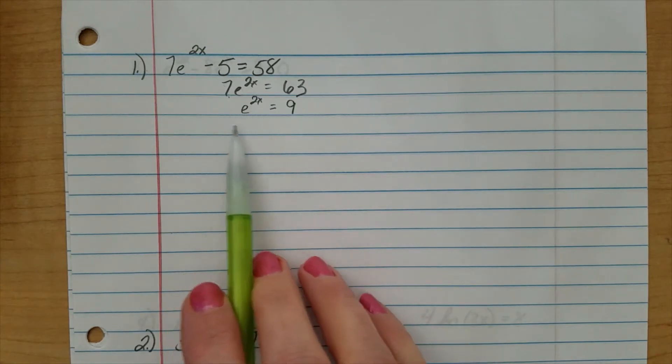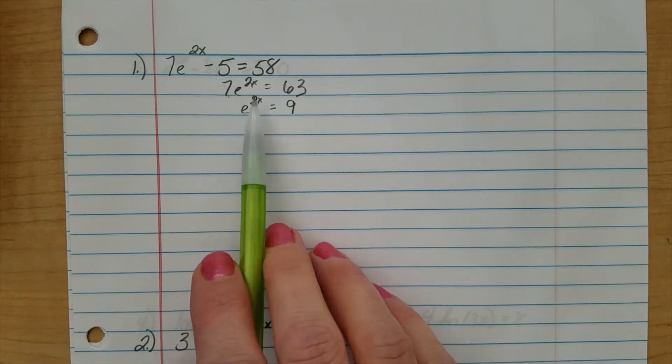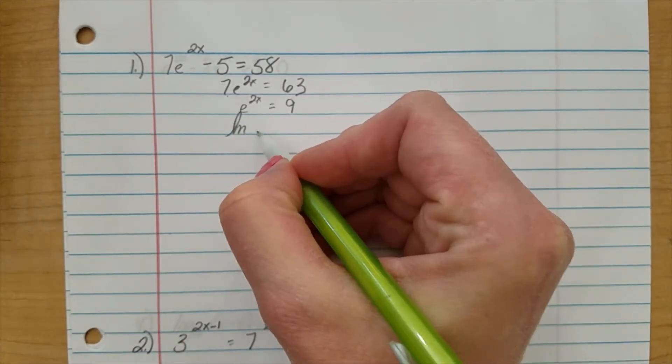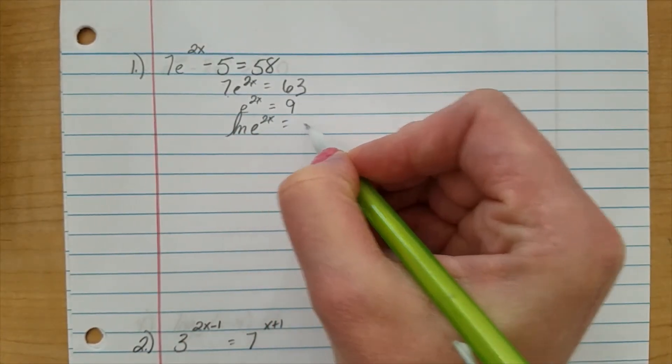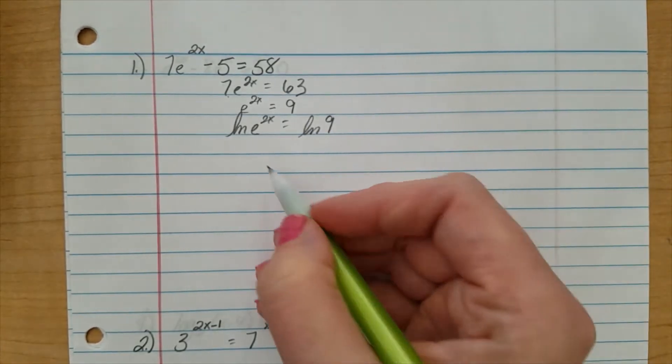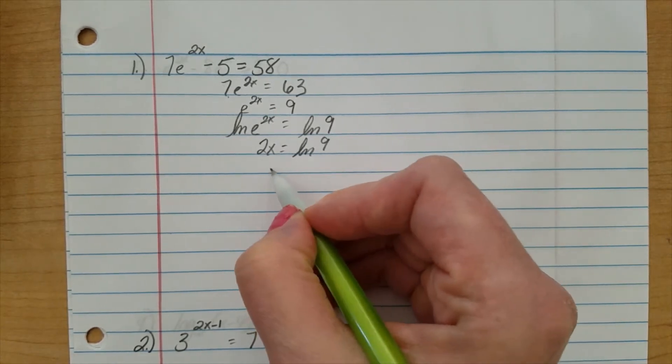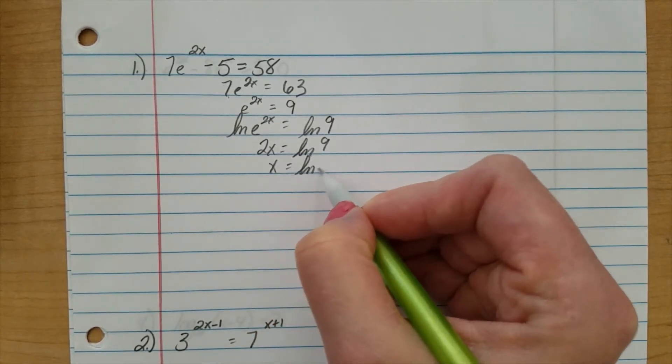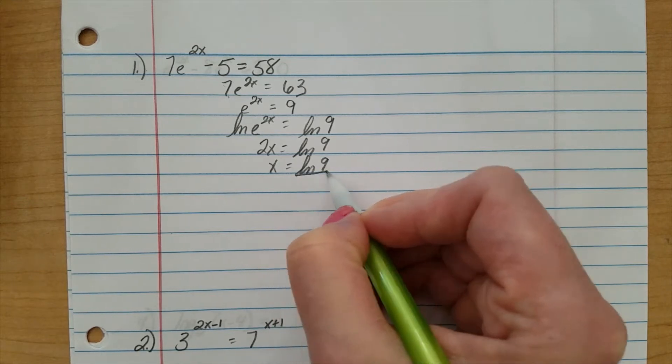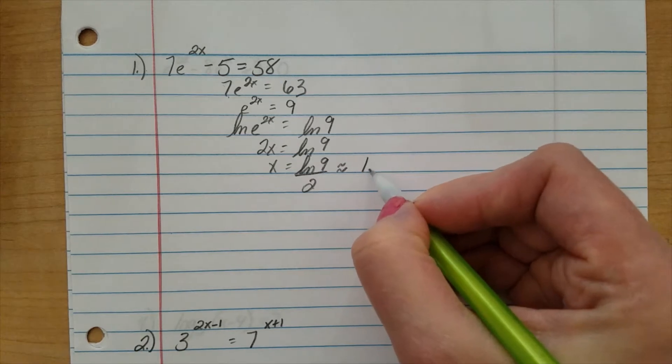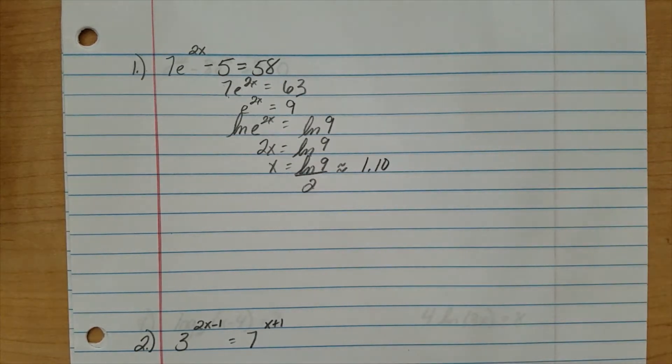Now, to undo the e so I can get that exponent to drop down, I'm going to take the natural log. The natural log is the inverse to e, and of course, what I do to one side, I have to do to the other. ln e to the 2x equals ln of 9. Here we go. 2x equals ln of 9. I'm going to divide out the 2. x equals natural log of 9 divided by 2. We're going to pop that in the calculator. We should get, we'll call it 1.10. We'll do two decimal places.